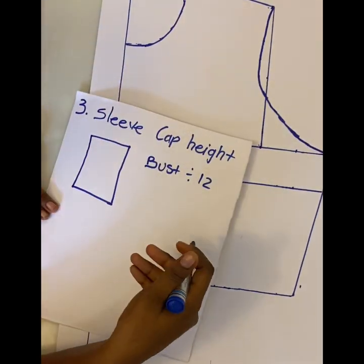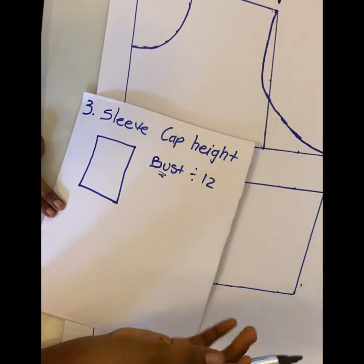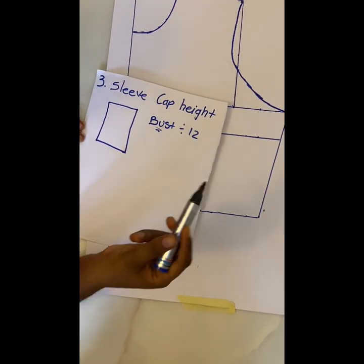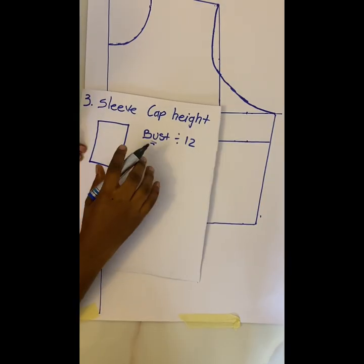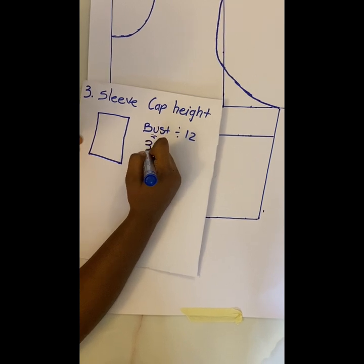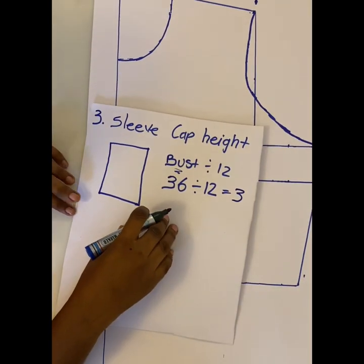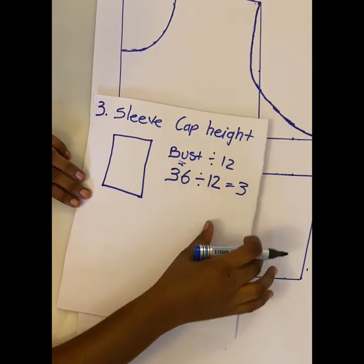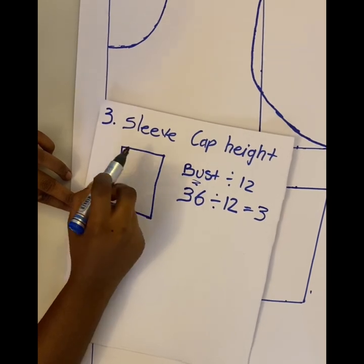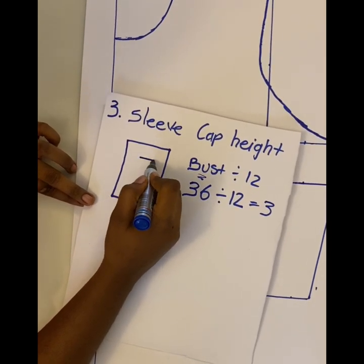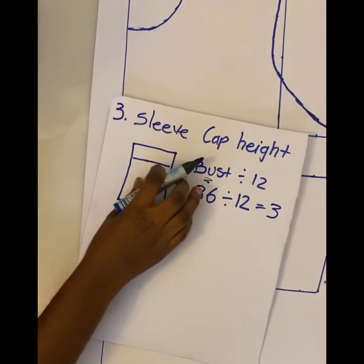If you notice, the bust measurement appears in almost all the formulas — that's because the bust is one of the first measurements taken on a client and is essential throughout. So for a bust of 36: 36 divided by 12 equals 3. For someone with a bust of 36, the sleeve cap height is 3. From the top of the sleeve you measure down 3 inches — that's your sleeve cap height.